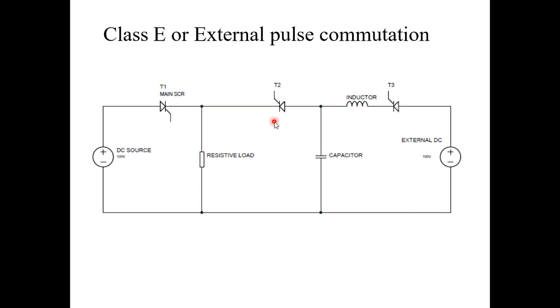Now you have to fire T2 to turn off the main SCR T1. When you fire T2, capacitor voltage will appear across the resistive load. Now, the cathode of T1 will get more positive voltage than the anode. This will reverse bias T1 and turn it off.